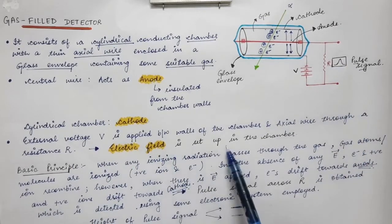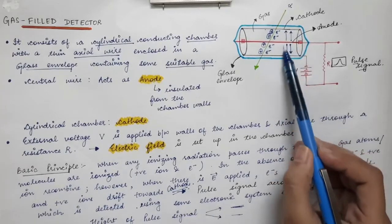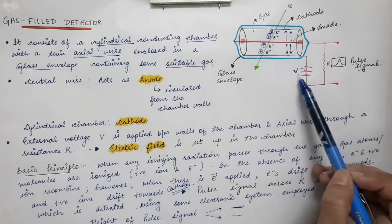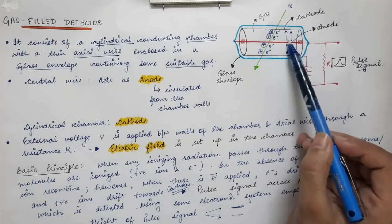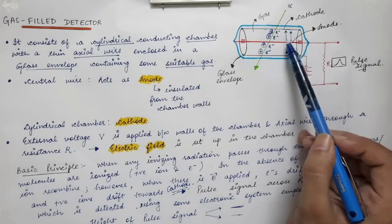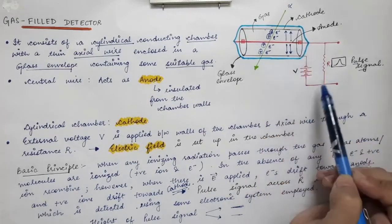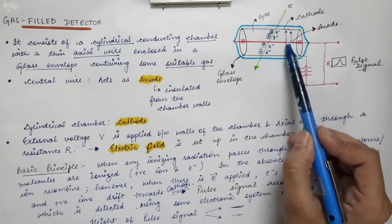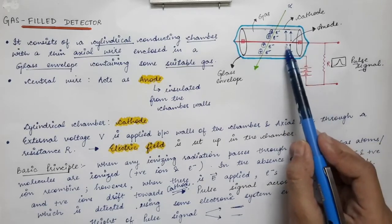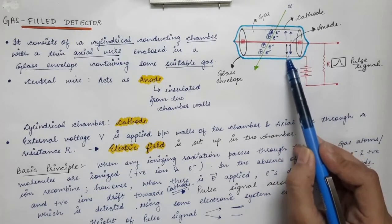Due to the external voltage, an electric field is set up inside the chamber. This electric field is directed from the wire towards the walls of the chamber, because the direction of electric field is always taken from positive towards negative. Since the wire is connected to the positive terminal (anode) and the chamber walls are connected to the negative terminal (cathode), the electric field inside directs from the axial wire towards the walls of the chamber.